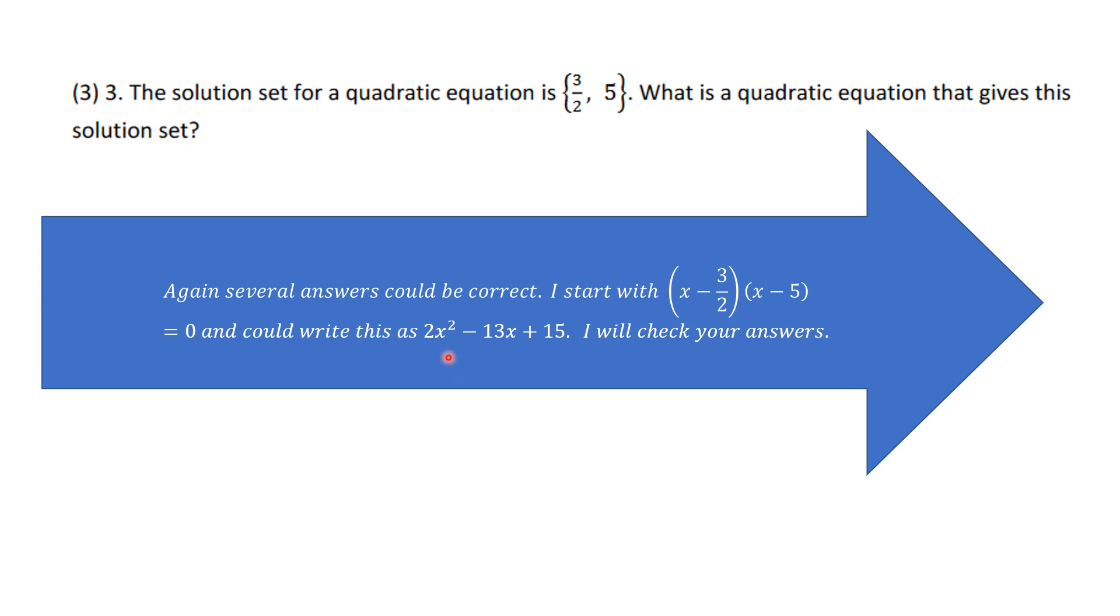But it's either going to be, it could be, and this is one solution, 2x squared minus 13x plus 15. I multiply all the way through here by 2 and then I expand it. I will be checking your answers to make sure they work. This is either going to be right or wrong, 3 or 0.